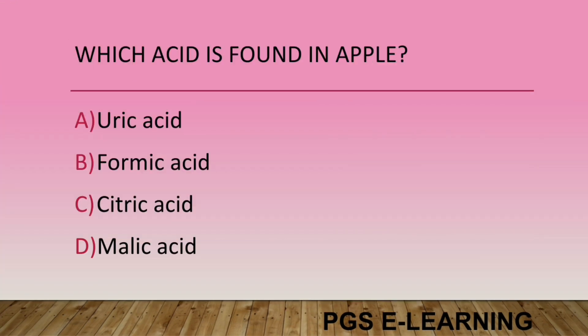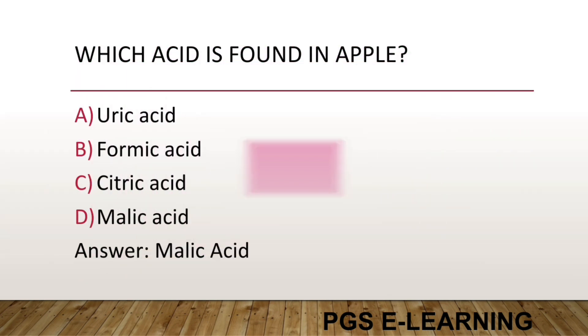Which acid is found in apple? Option A, uric acid. Option B, formic acid. Option C, citric acid. Option D, malic acid. Correct answer is malic acid.